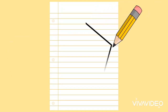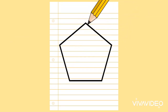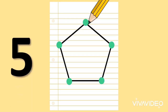What shape am I drawing? A pentagon. And how many corners does a pentagon have? Let's count. One, two, three, four, five. Five corners.